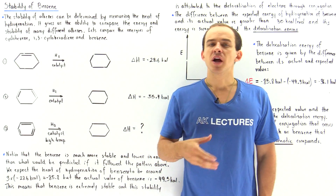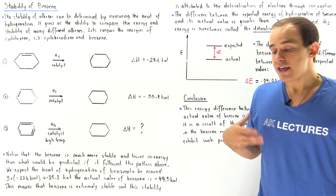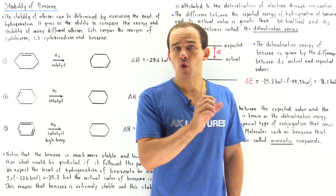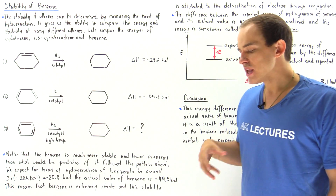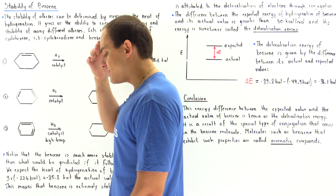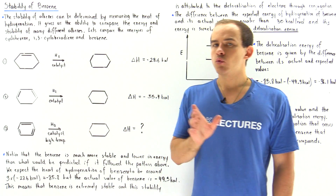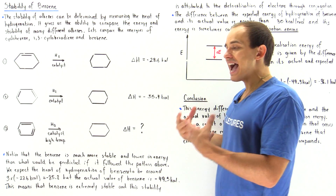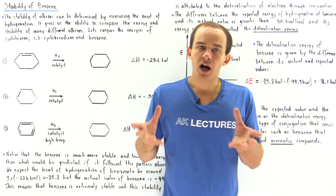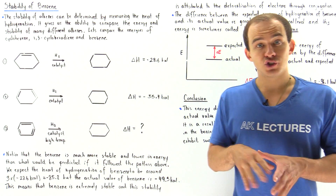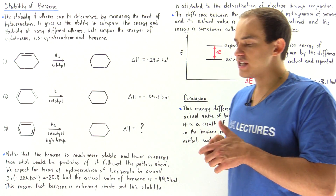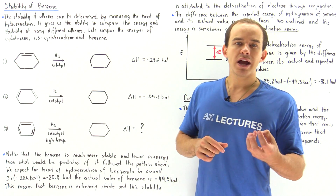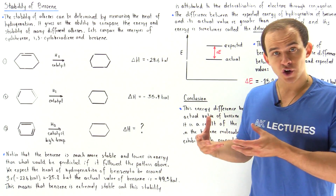The benzene molecule contains a special type of conjugation. This special type of overlap between all the orbitals of the carbon atoms in benzene stabilizes the molecule, decreasing its energy. The question is: by how much is the energy actually decreased because of this stabilizing effect due to the special type of conjugation in the benzene molecule? This is the question we want to explore in this lecture.